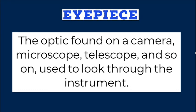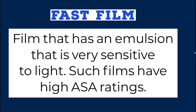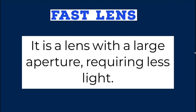Eyepiece: the optic found on a camera, microscope, telescope, and so on, used to look through the instrument. Fade in/fade out: gradually changing video from dark to picture or picture to dark. Fast film: film that has an emulsion that is very sensitive to light; such films have high ASA ratings. Fast lens: a lens with a large aperture, requiring less light.